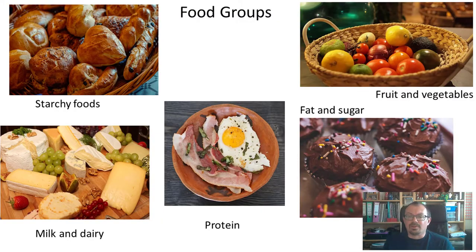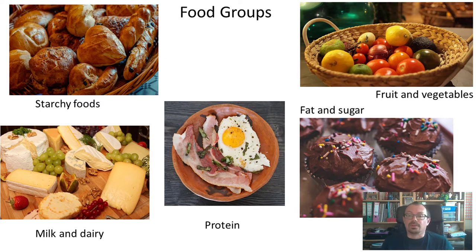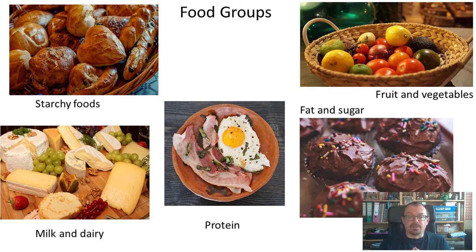We can divide the different chemicals in our food into groups. The first group is starchy foods, often called carbohydrates. They include things like bread, pasta, potatoes, and breakfast cereals. These foods give us lots of energy. Often runners, the night before a big race, will eat a huge bowl of pasta to give them energy for the next day.